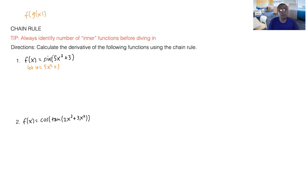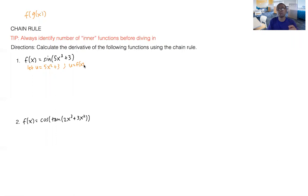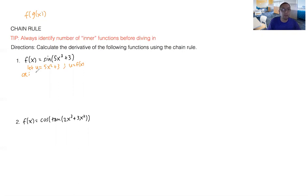Since we substituted u for all the stuff inside, note that u is still a function of x, meaning the value of u still depends on the value of x. So it's a function of x, and therefore we can take a derivative with respect to x. When we're doing the chain rule, we take the derivative of the inside function and multiply that by the outer function — the sine of this.